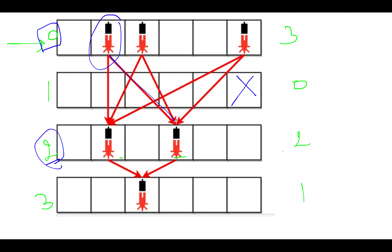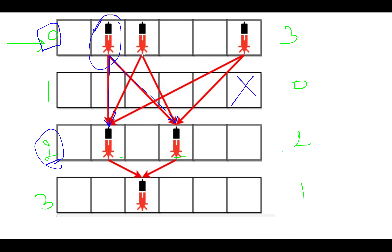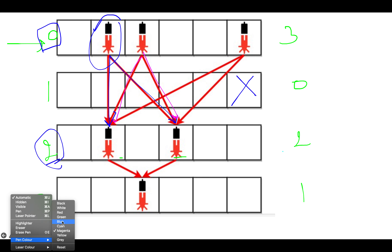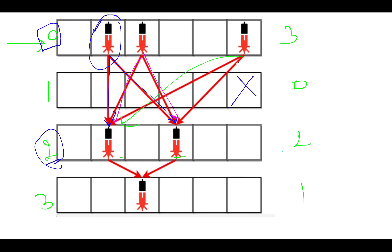Each beam will terminate at each security device in the next upcoming row. This makes two beams corresponding to the first device, two beams for the second device, and two beams for the third device. In totality, there are six beams that communicate between the zeroth row and the second row. So we write six so far and move ahead to see what happens with the second row.